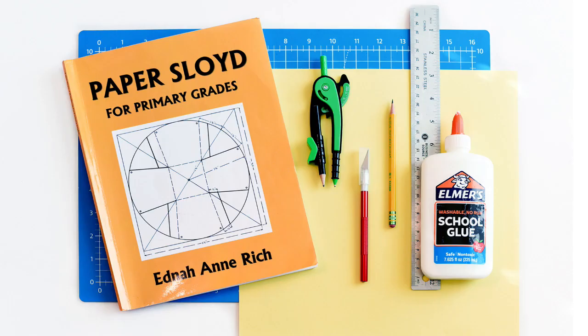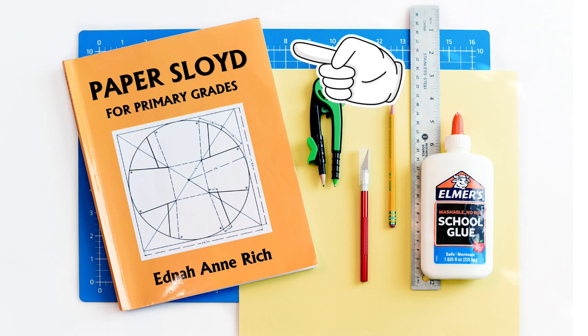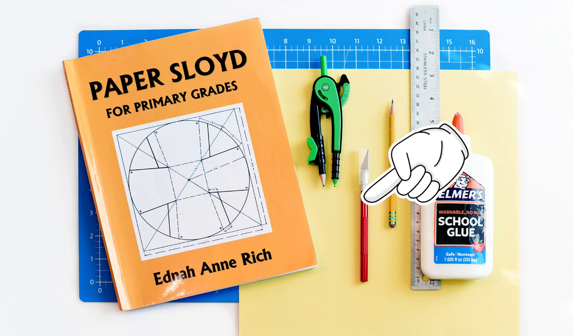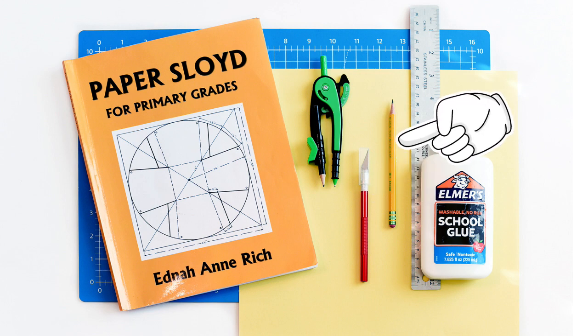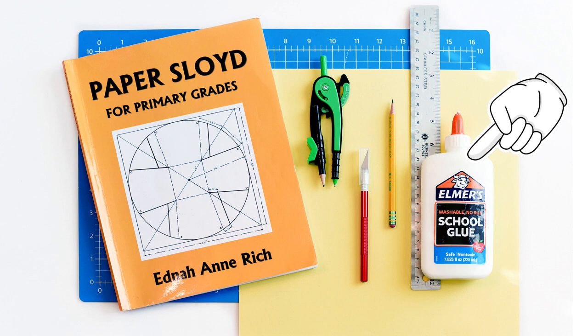Now the materials we're going to need for this project are the book Paper Sloyd for Primary Grades by Edna Ann Rich. Again, if you don't have this book, I'll put a couple of links below. You can find it online. You're also going to need a cutting mat, a compass, an exacto knife, a pencil, a ruler, some glue, and some good quality paper that is at least 6 inches by 6 inches. Ours is 12 by 12, so I'll show you how we manage that next.